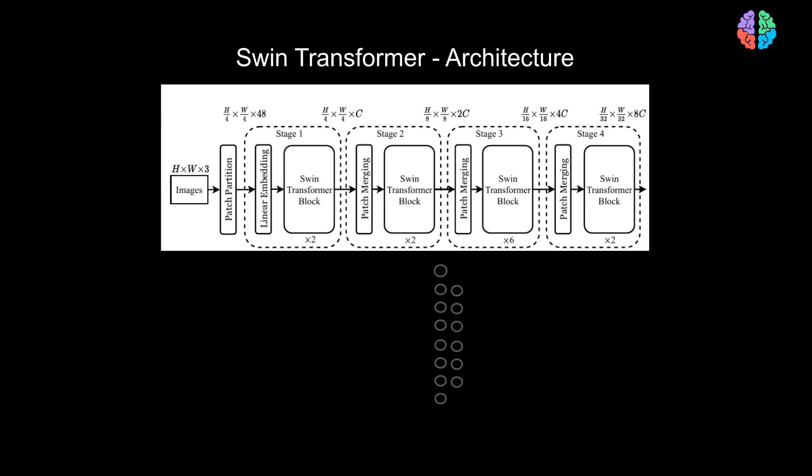This is figure 3A from the paper which shows the model architecture. It has four main components: patch partition, linear embedding, Swin Transformer block, and patch merging. If we understand each of these blocks, then we pretty much understand the paper. Let's go through one by one.